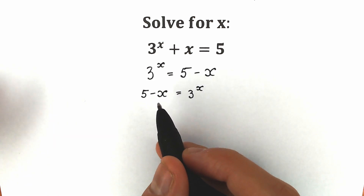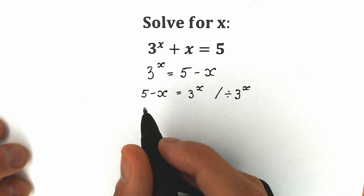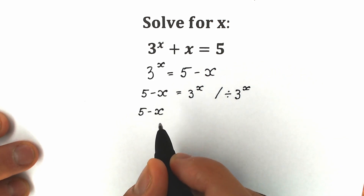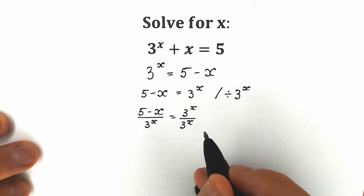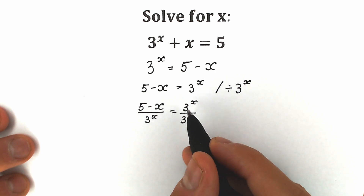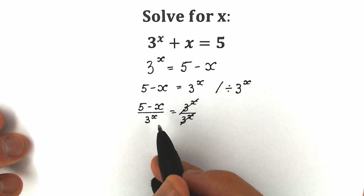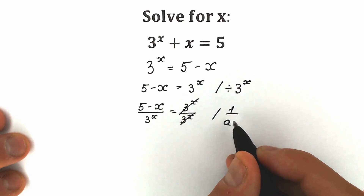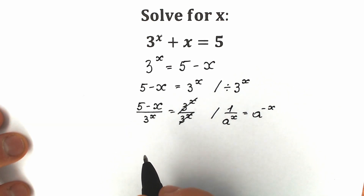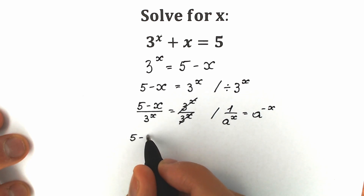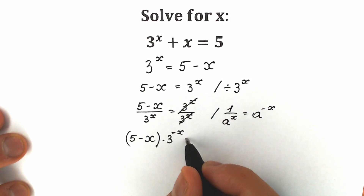What are we going to do next? Let's try to group our x's — our variables on the left side and our constants on the right side. For this, let's divide both sides by 3 to the power x. When we divide both sides by 3 to the x, we have 5 minus x on the left side divided by 3 to the x. On the right side we have 3 to the x divided by 3 to the x — this cancels, giving 1. And we can bring 3 to the x from the denominator to the numerator using the property: 1 divided by a to the power x equals a to the power minus x. So we get 3 to the power minus x.